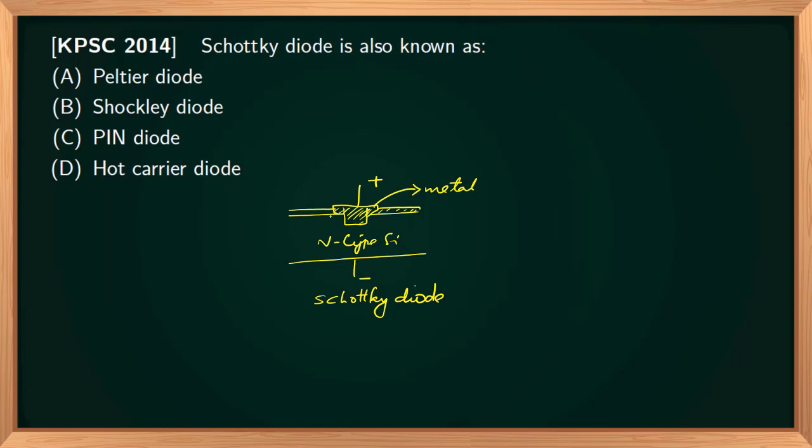When a Schottky diode is in unbiased condition, the electrons lying on the semiconductor side have very low energy level when compared to the electrons present in the metal. Thus the electrons cannot flow through the junction, which is called Schottky barrier.